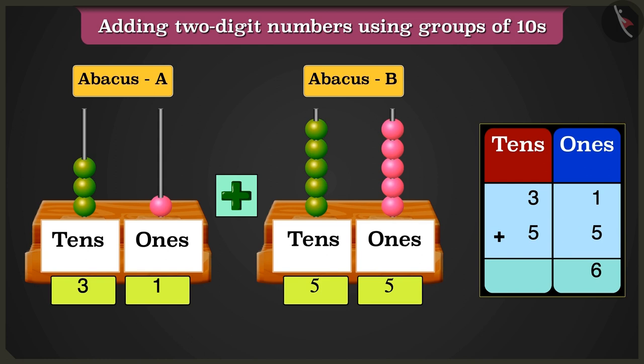Now in the box of 10s, adding 3 10s and 5 10s, count after 3, 4, 5, 6, 7 and 8 10s is what we get.